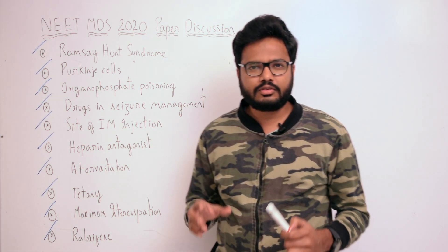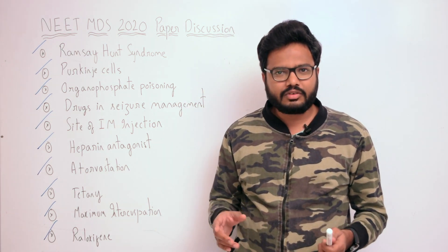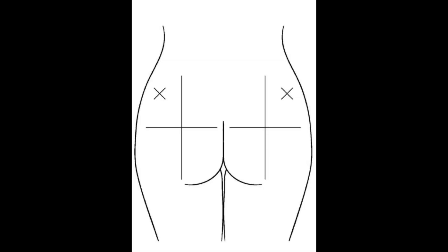Next, the site of IM injection. Observe the image to identify the correct site. For intramuscular injections, the drug is injected into one of the large skeletal muscles — deltoid, triceps, gluteus maximus, rectus femoris, etc. Muscle is less richly supplied with sensory nerves and is more vascular, so absorption is faster and it is less painful, though self-injection is often impractical because deep penetration is needed.